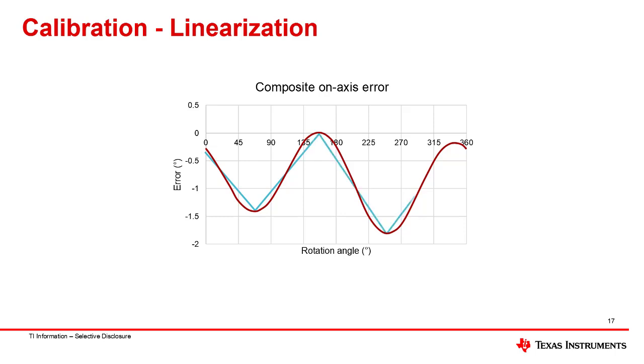For example, a four-point calibration might be accomplished by determining the peak error locations and making linear approximations to correct the error. The resulting post-calibration error shows a significant improvement. A calibration of this nature will improve with greater number of linearization points, as the approximation begins to more closely fit the real error.